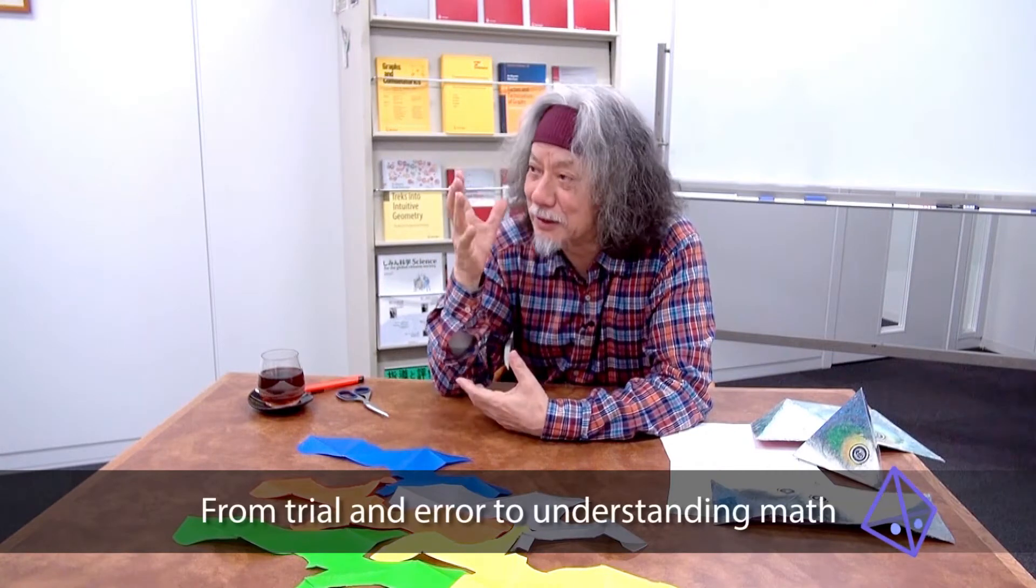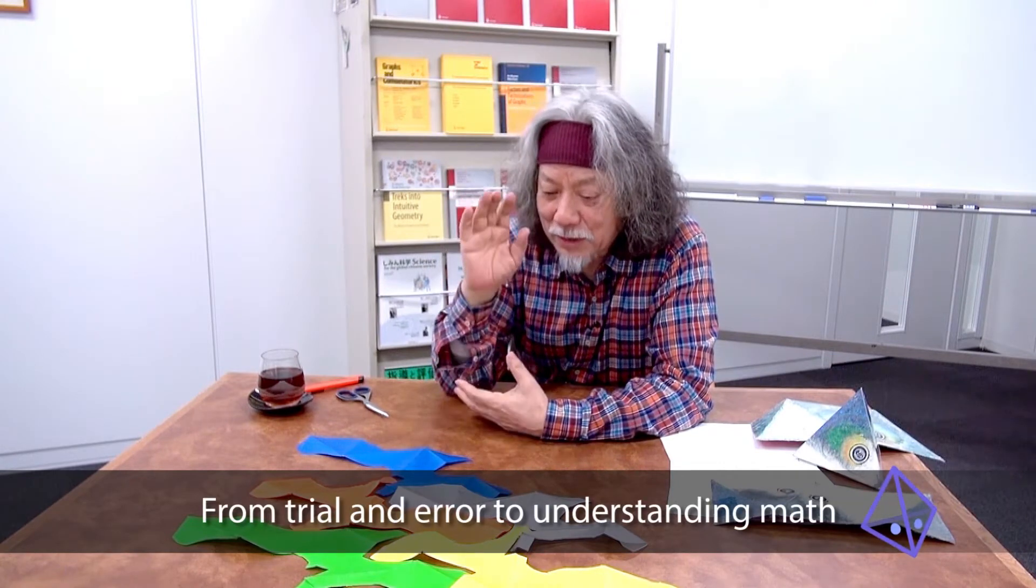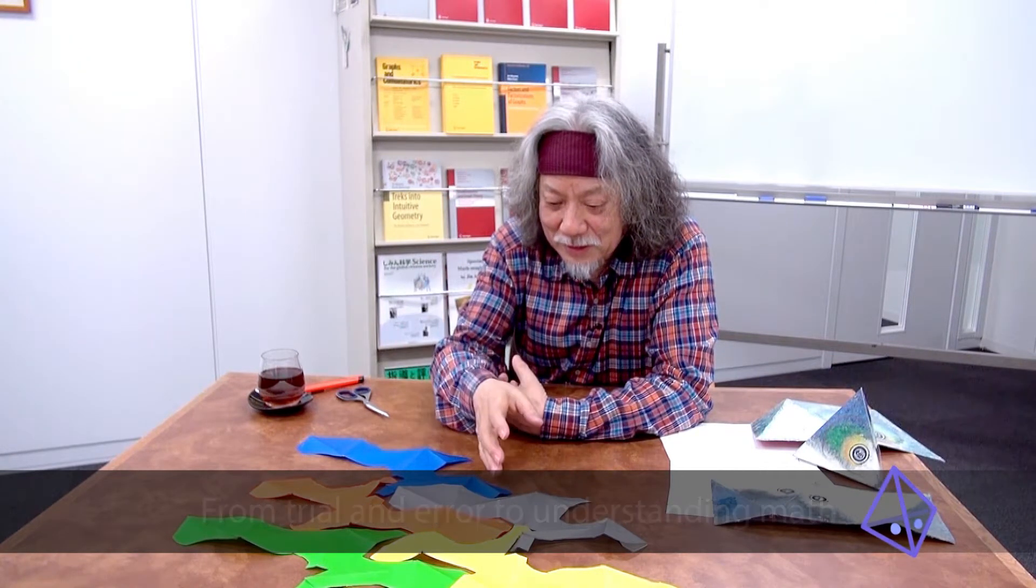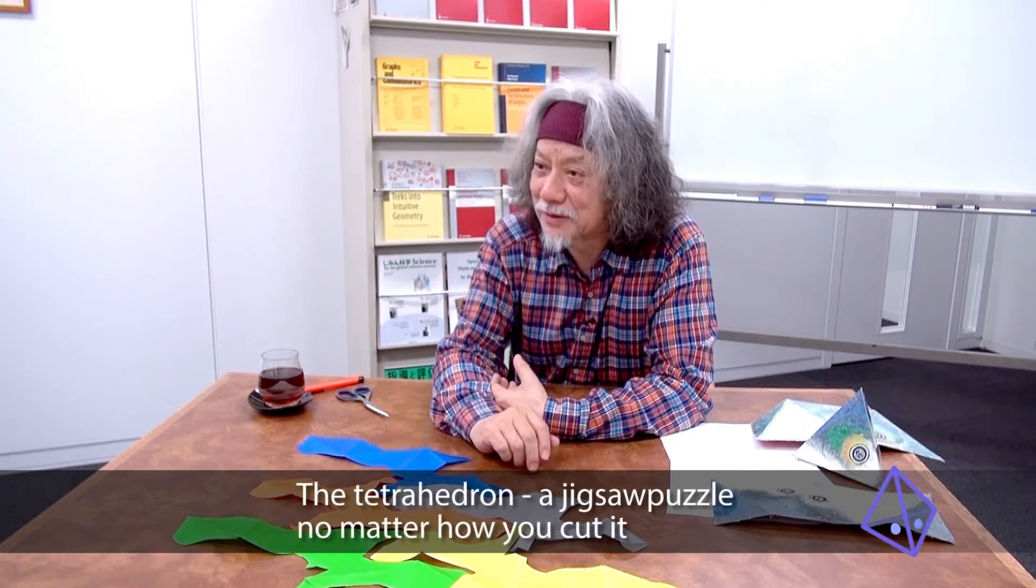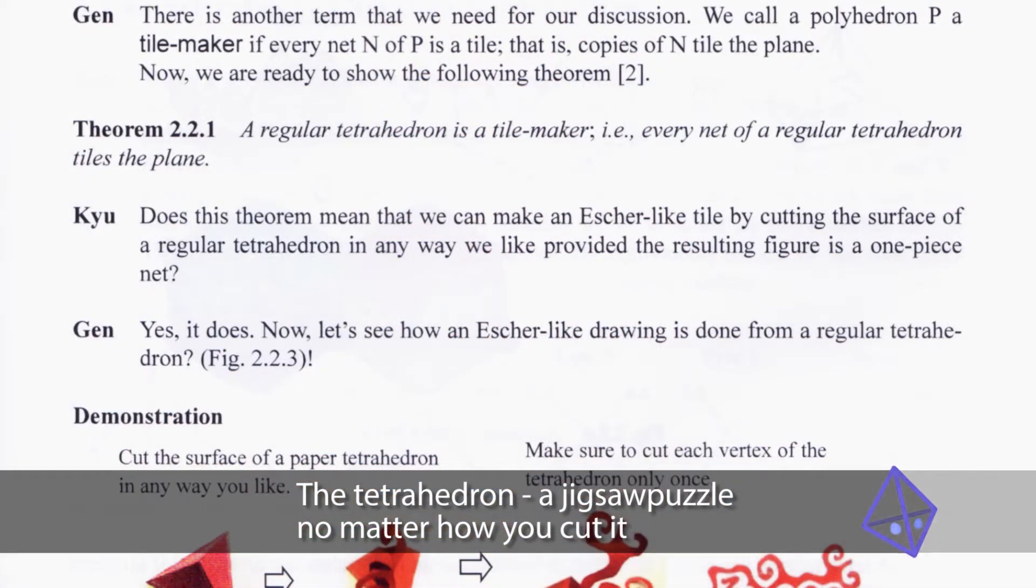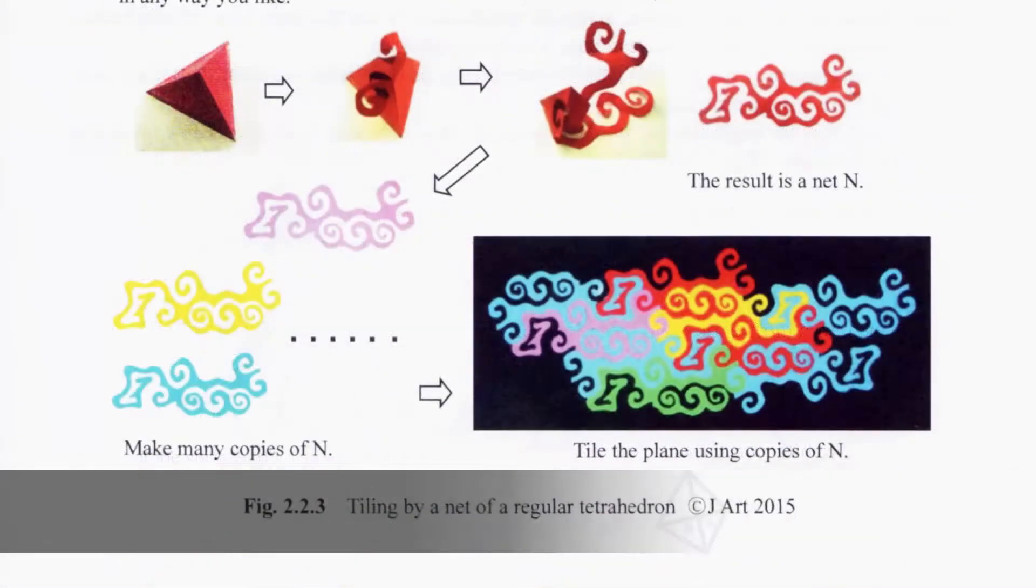So let's make it into a theorem. No matter how you unfold a tetrahedron, it becomes a jigsaw puzzle. Whatever shape you unfold, it becomes tiles.